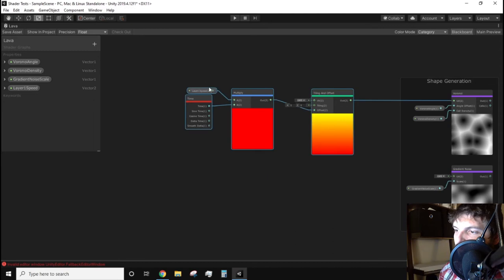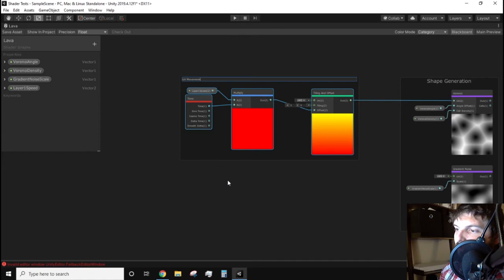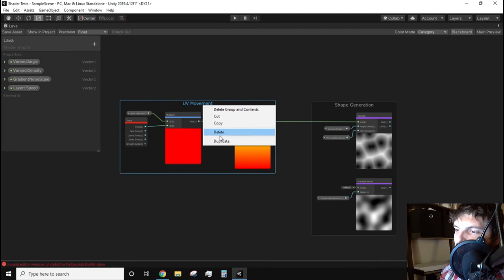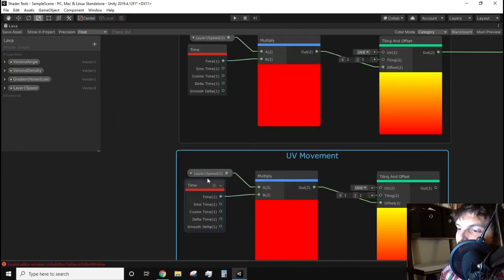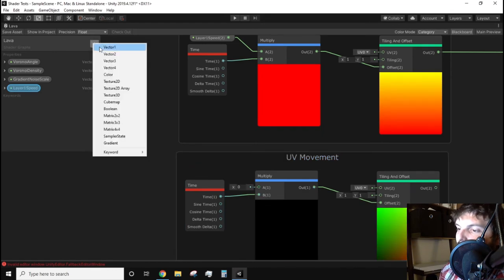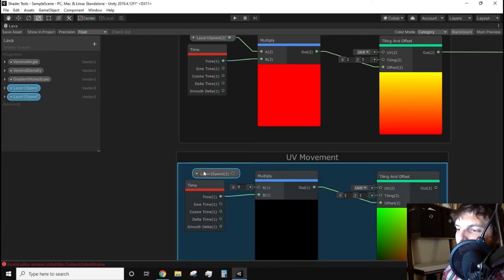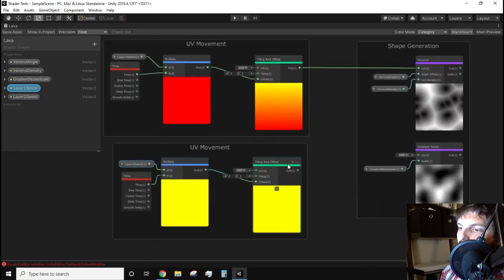Group these UV movement nodes which will let us do another neat trick in shader graph. Now if we highlight this newly created group by left mouse clicking we can right mouse click and duplicate this series of nodes. We can connect this duplicated UV movement group to the gradient noise and one thing we need to modify on this new UV movement group is the layer1 speed property. We'll create a new vector2 property in the blackboard and call it layer2 speed. This will replace the layer1 speed property and this gives us the ability to control both noise speeds independently.